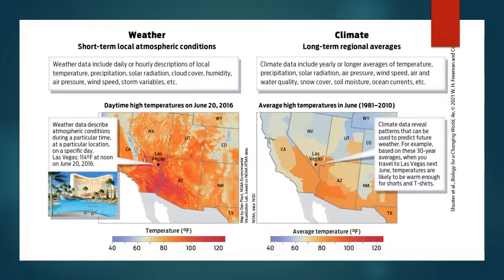We differentiate weather and climate because we do have different weather patterns, and they tend to be focused on what our climate patterns actually are. We can have yearly or longer averages of temperature, precipitation, solar radiation, currents, and moisture — and all of that goes into defining what the climate actually is, versus what's happening on a shorter term with weather. Weather can be changing over time, just like climates can.